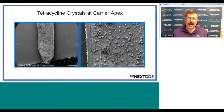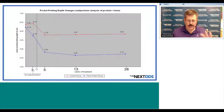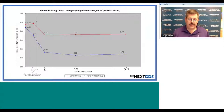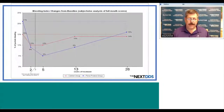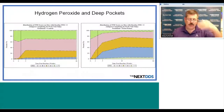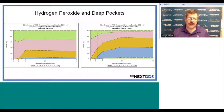Studies placed tetracycline crystals at the pocket apex to see what's going on at the bottom. The red line is the control group and the blue line is the PerioProtect group — we can see a reduction over time compared to the control group wearing a tray with no active gel. Pocket probing depth changes over time show a dramatic improvement with PerioProtect trays and peroxide. At 13 weeks, the data is compelling, but if we stop using the treatment, we start seeing pocket depths increase again over time. Hydrogen peroxide really gets down into the depths of the pocket no matter how deep, gets rid of the biofilm, and allows the body to heal itself once the offending bacteria are removed.